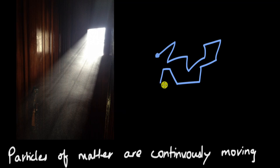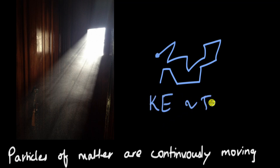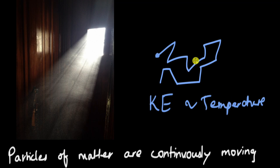Because the particles are continuously moving, we say that they have a certain kinetic energy of their own. Because they have kinetic energy, they have a certain temperature — every substance has a temperature of its own. If you increase the temperature, the particles start moving faster; that is, their kinetic energy increases.